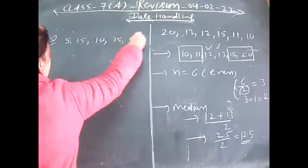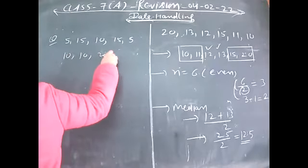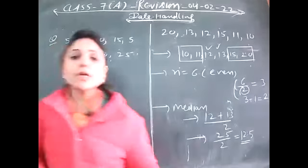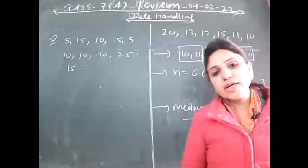Find the median of the data. We want to find the median of this data. First of all, arrange the data in ascending order from lower to higher: 5 comes two times, then 10 coming three times, then 15 coming three times, and then 20, then 25. Ten items are there in total.